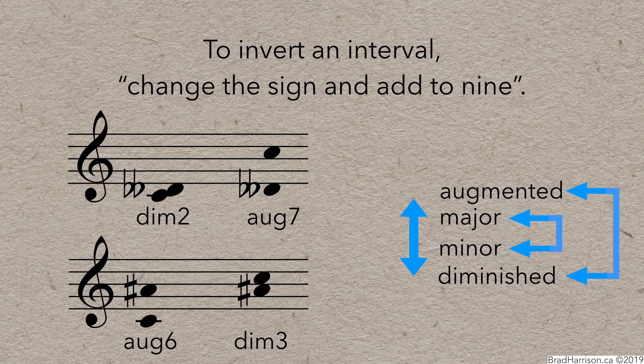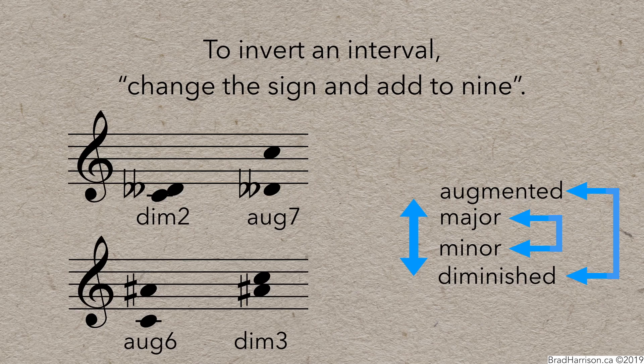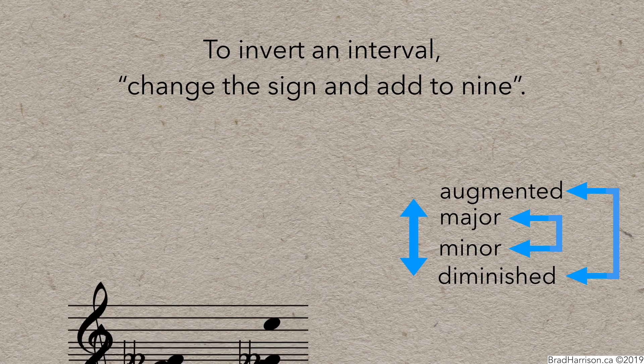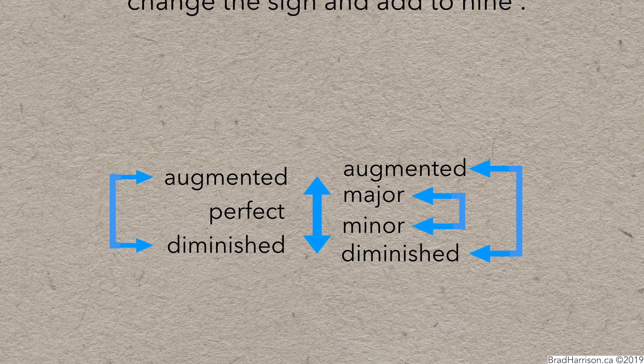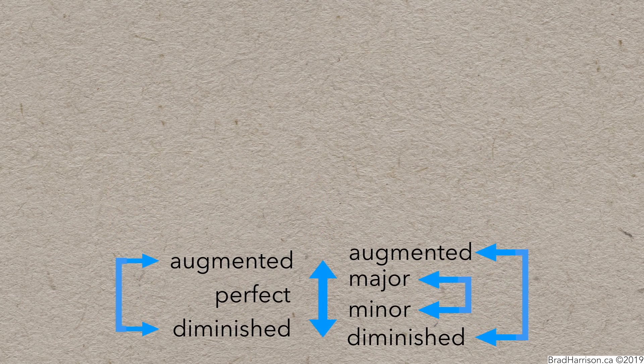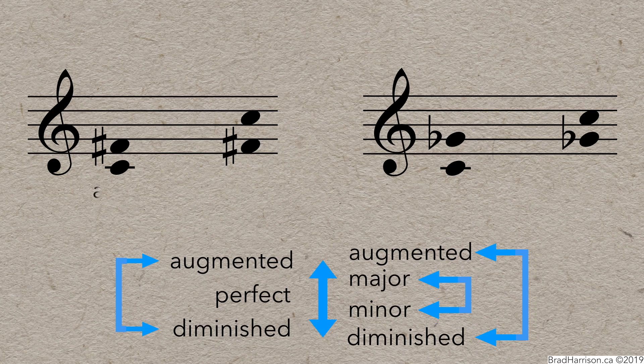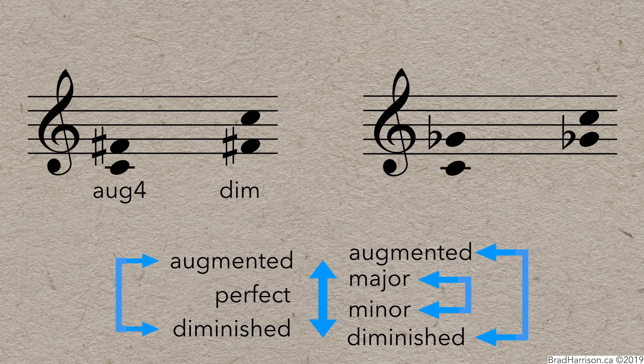Of course, double checking intervals that start on A sharp and D double flat are kind of a pain, but I promise that it works out. Just change the sign, and add to 9. Also, augmented or diminished unisons, fourths, fifths, and octaves will invert to each other, and their numbers will add to 9. So, an augmented 4th will invert to a diminished 5th, and a diminished 5th will invert to an augmented 4th.